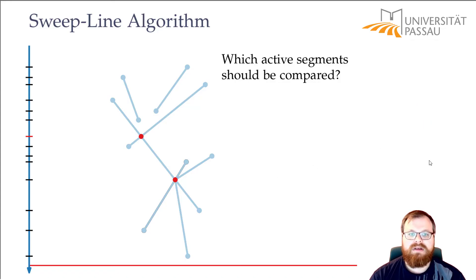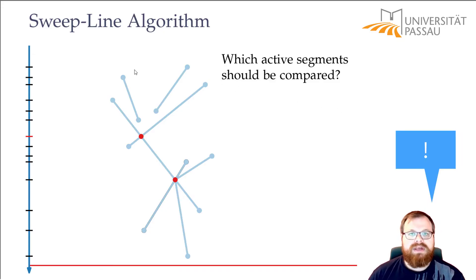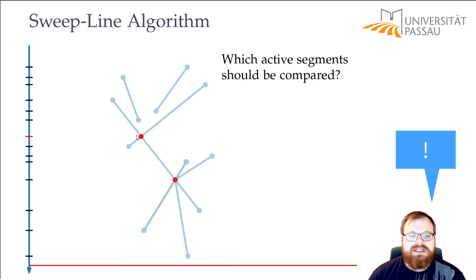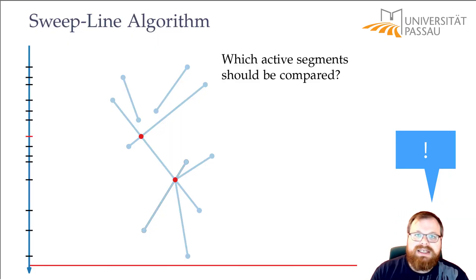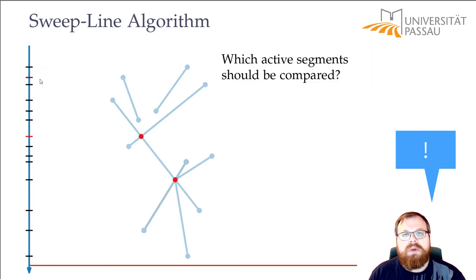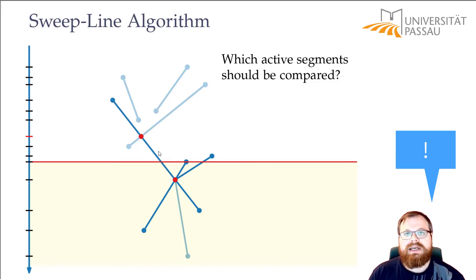Before we formalize this algorithm, there is one more thing to think about: what data structures do we require? There are basically two things. We have all these event points — most can be computed in the beginning, but we also have intersection points that we must insert into the data structure containing all event points. So we need a data structure where we can easily insert new points and easily find the topmost point. The second thing is we need to know in which order we have the segments currently on the sweep line.